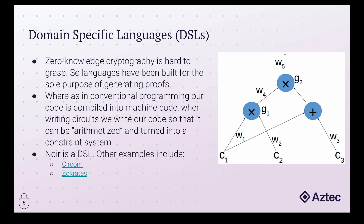We can think of it like a conventional programming language: when you write a program in Java, Rust, or any language of choice, it's not run the way you write it. You write code in a human-readable format, it's compiled down to machine code that the computer can run. The process is similar in a domain-specific language. When we write a program for a zero-knowledge proof, it's called a circuit — a name that derives from the underlying structure the code is converted into.